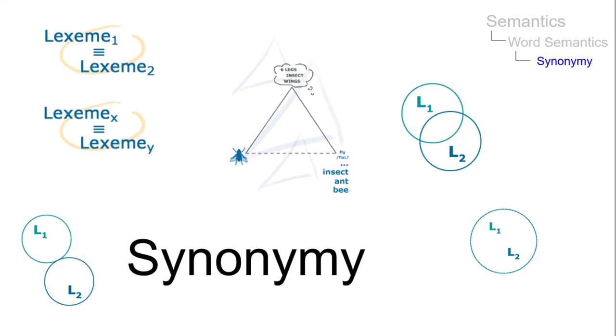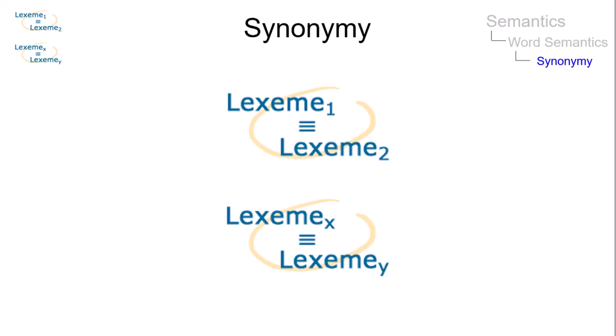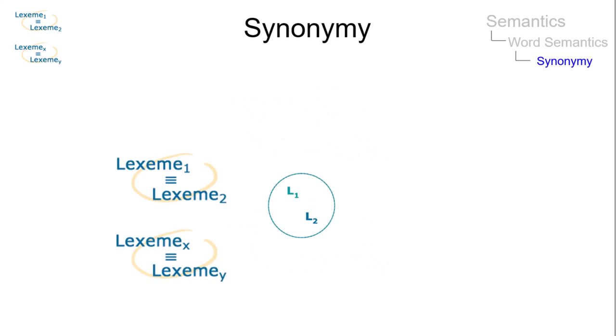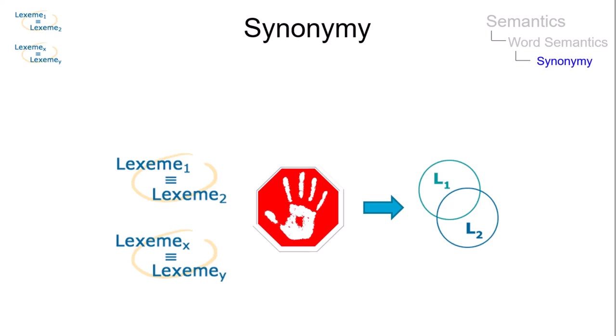Synonymy is traditionally defined as sameness of meaning. However, it can be maintained that no two words, or more precisely no two lexemes, have exactly the same meaning. It would seem unlikely that two such items would survive in a language.